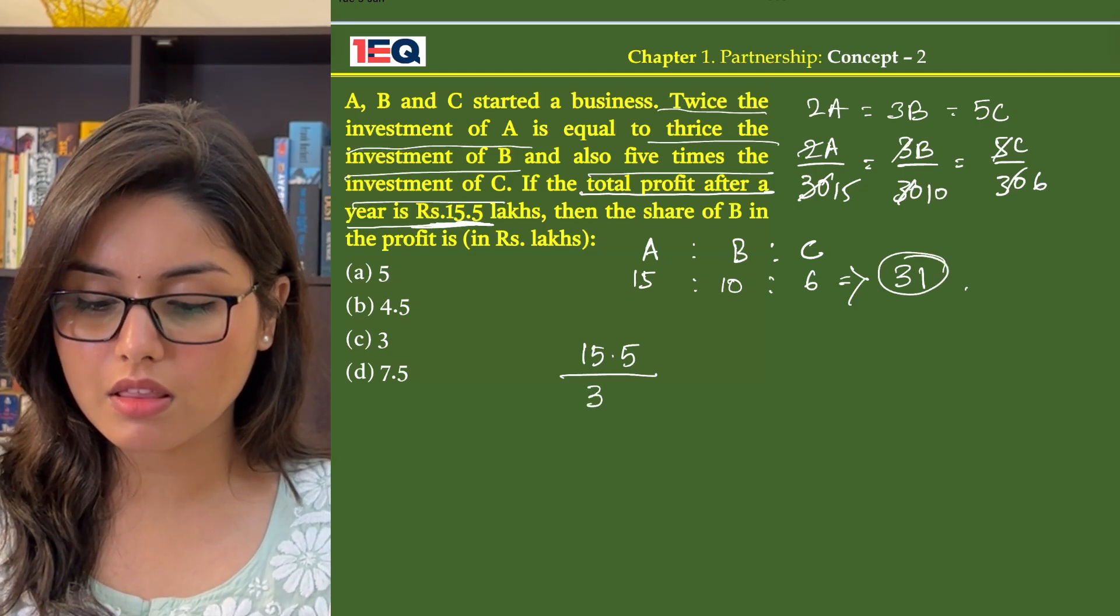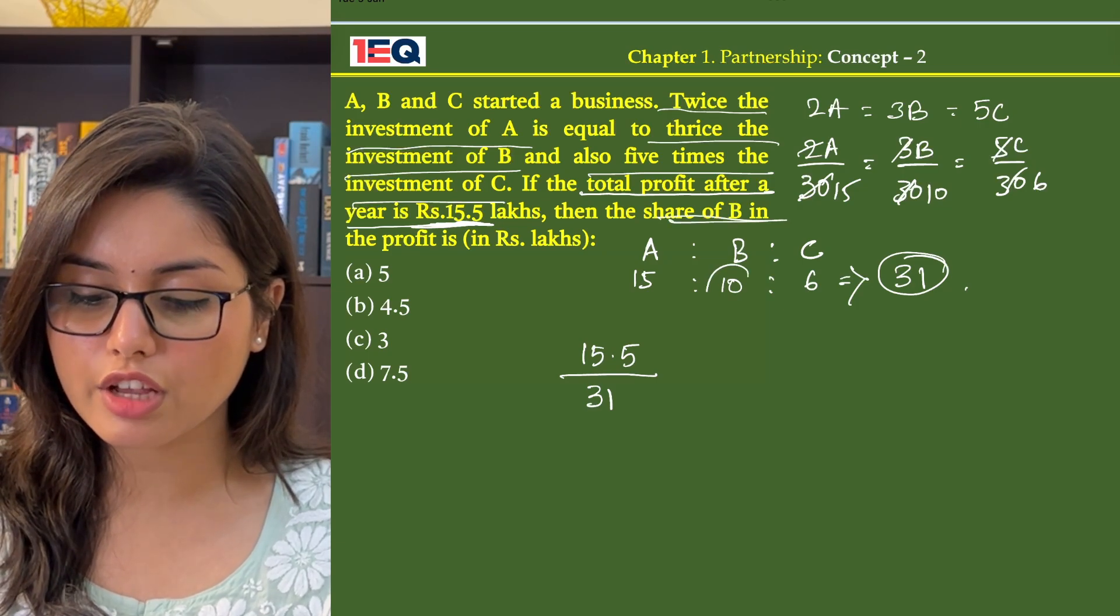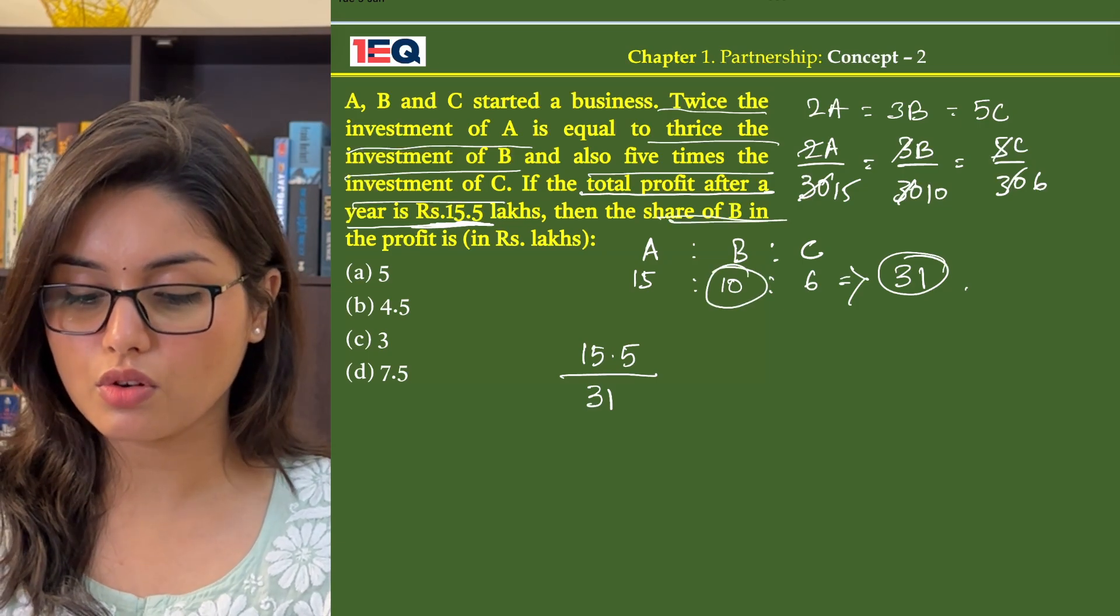Now dividing by 31, we have to find the share of B. What is the share of B? That is 10. So into 10.